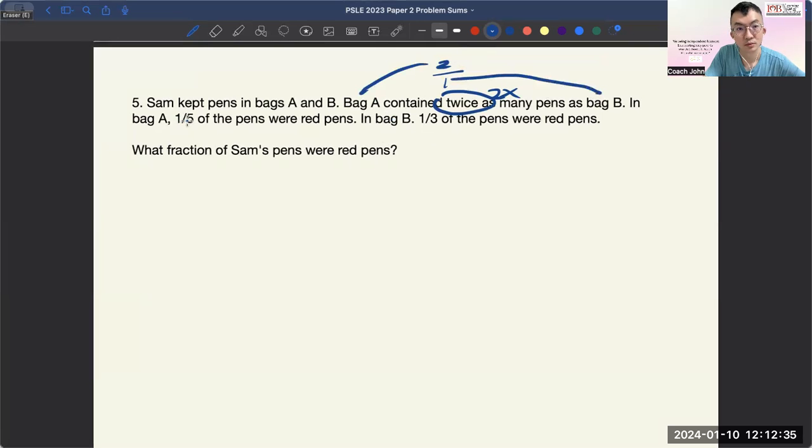Then, 1 out of 5, so in bag A, 1 out of 5 is for the red pen, and then 5 is for all the pens in A. Then for bag B, 1 will be for the red pens in bag B, and 3 will be for the pens in B. So these are the basic annotations that you need to do.